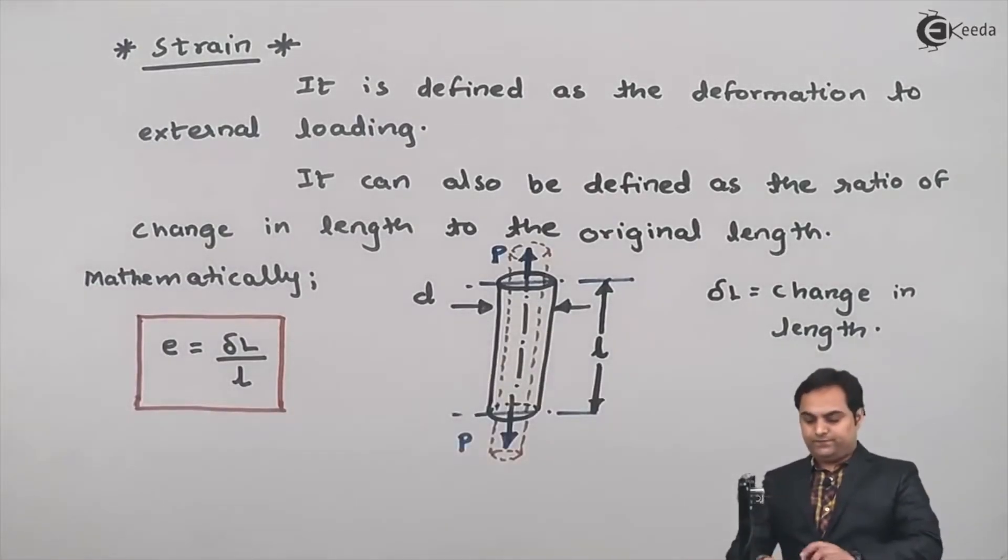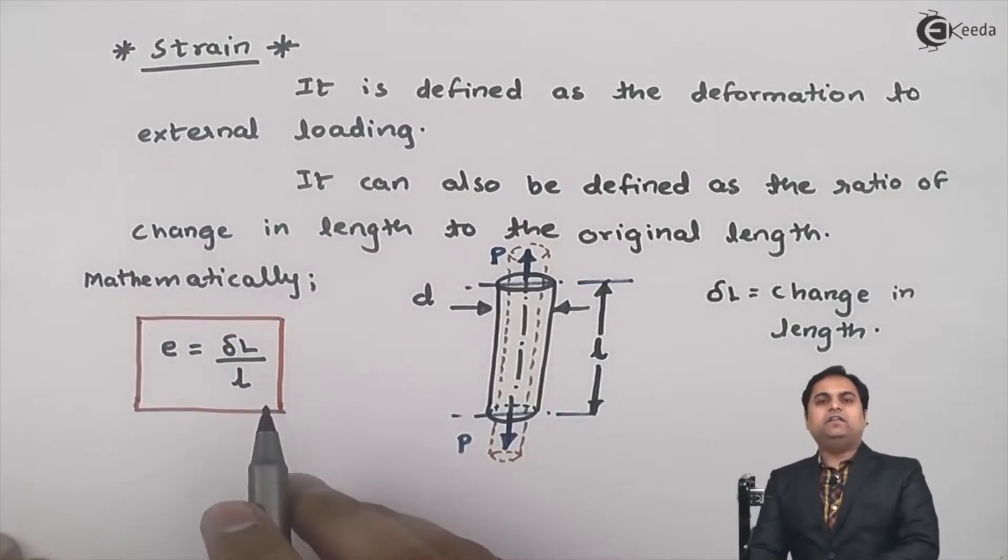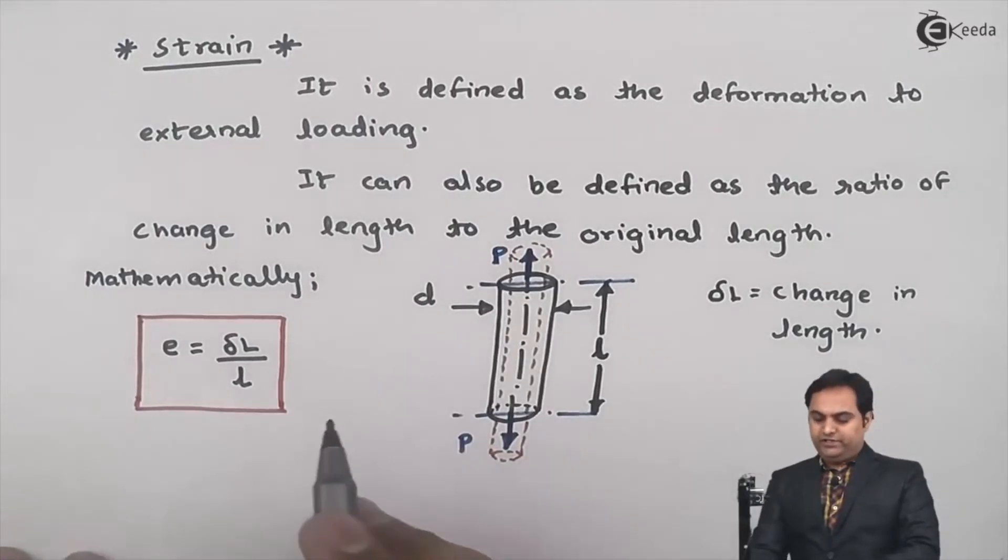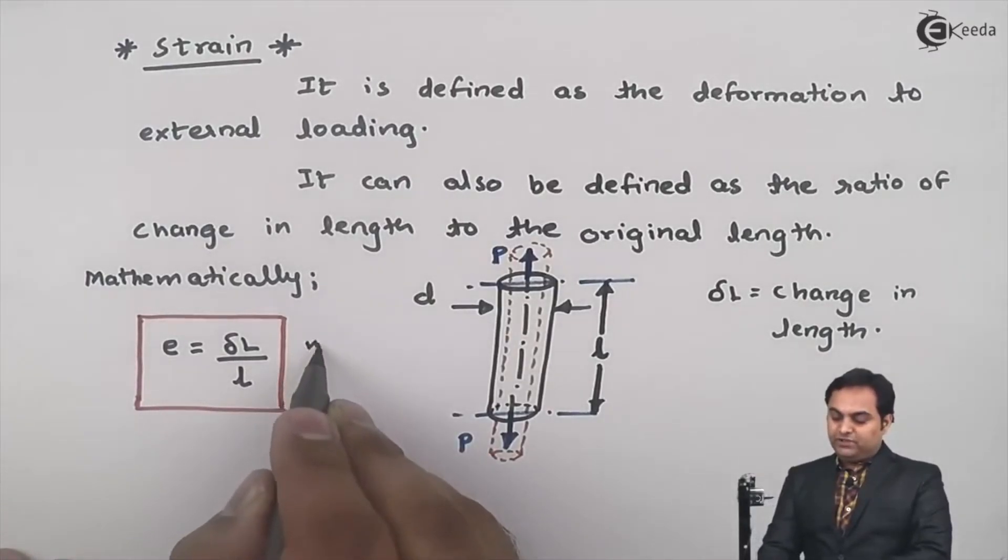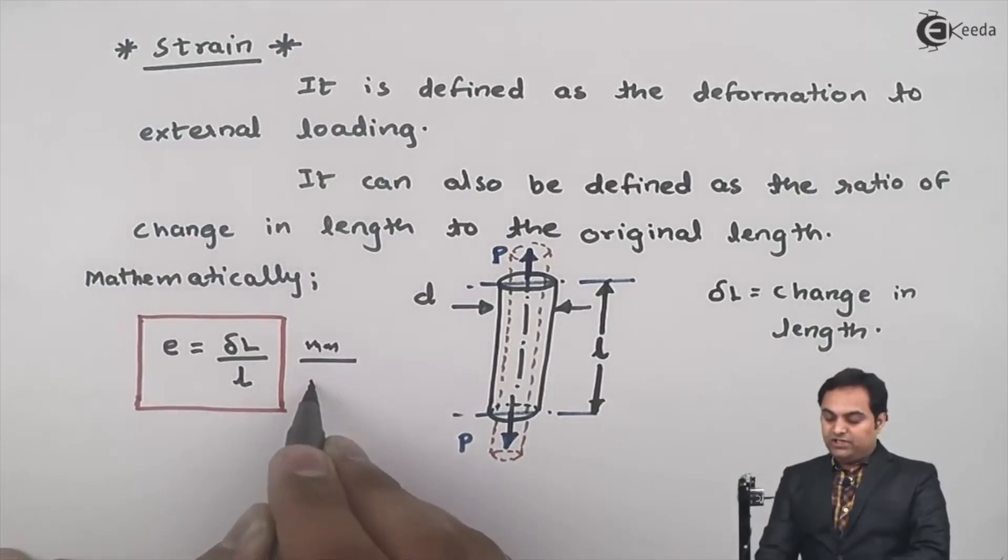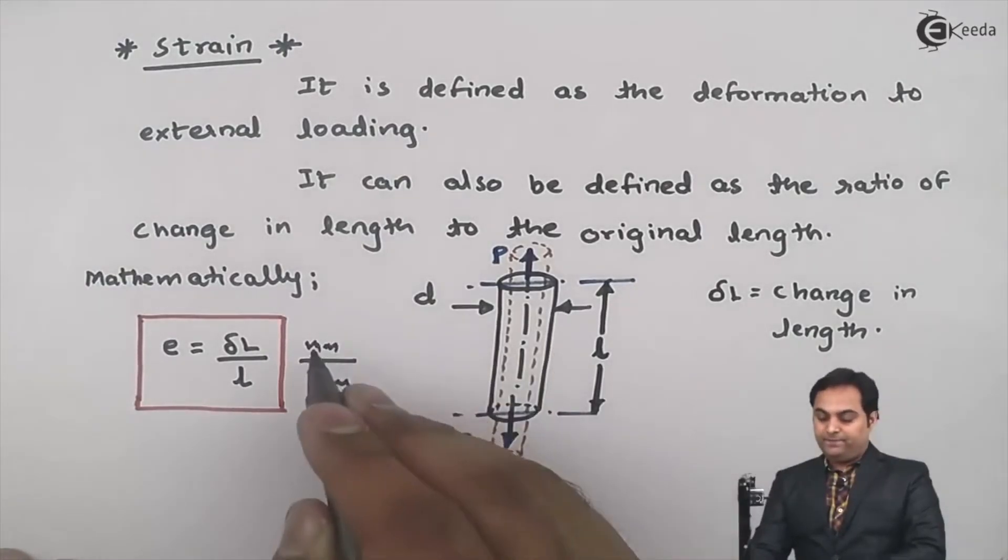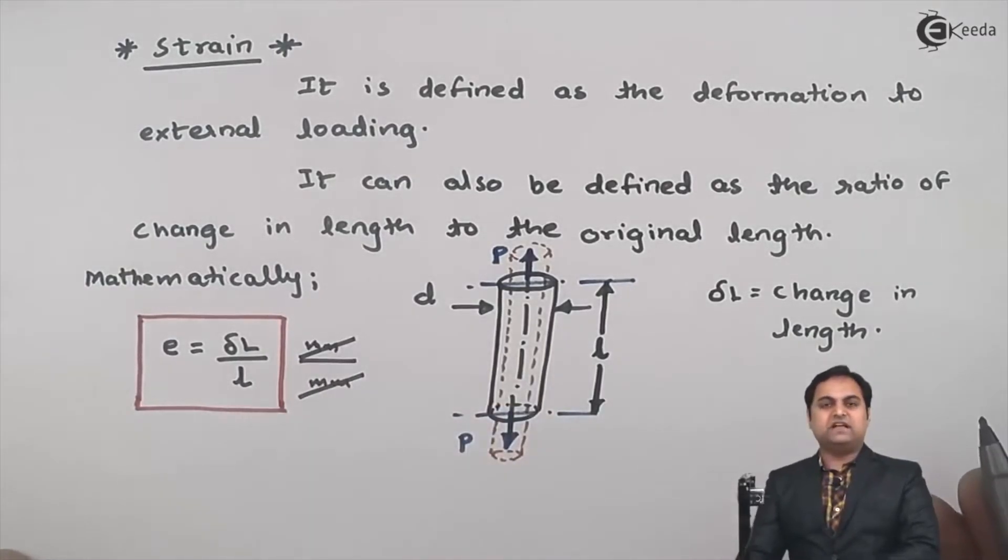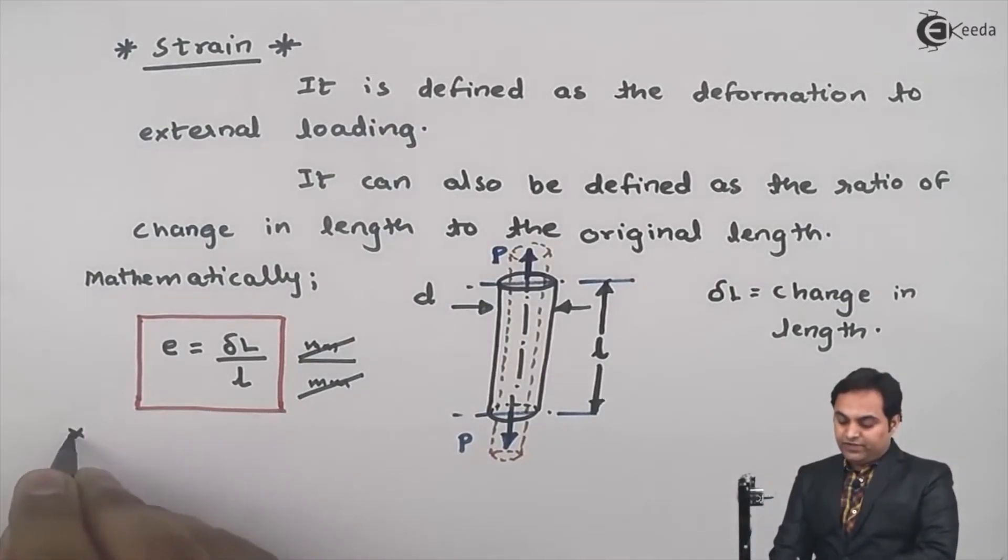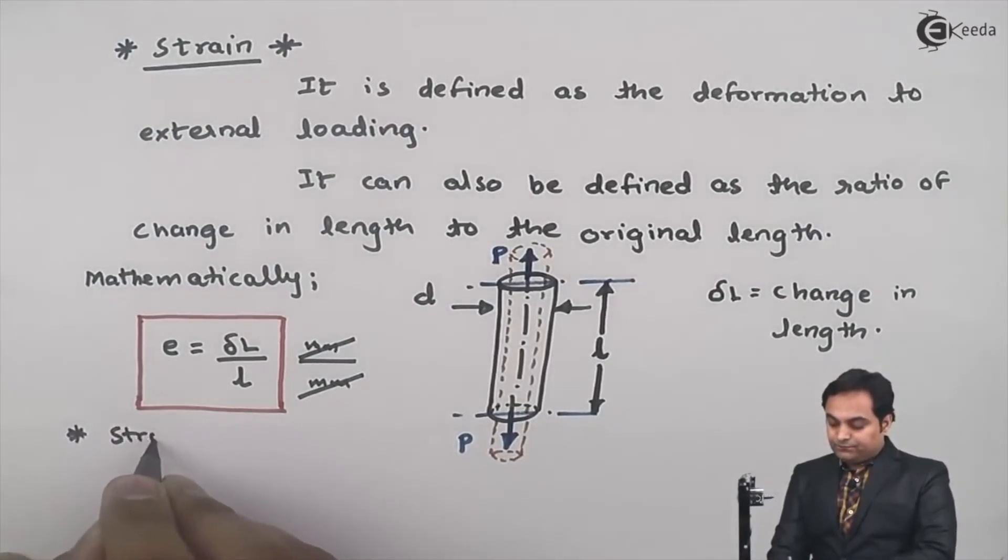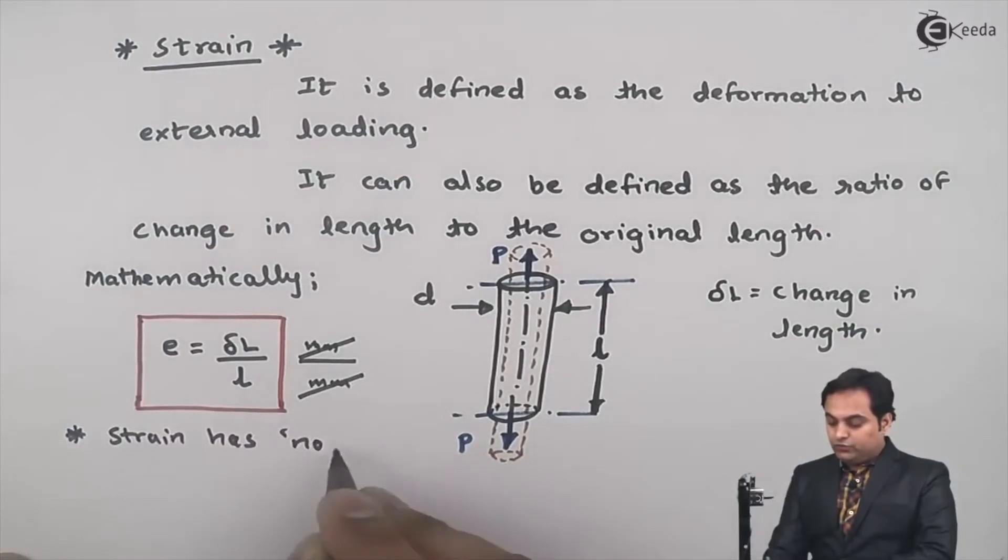If I want to know the unit of strain, change in length will be in terms of mm, and original length will also be in terms of mm. mm divided by mm gets cancelled out, which means strain has no units.